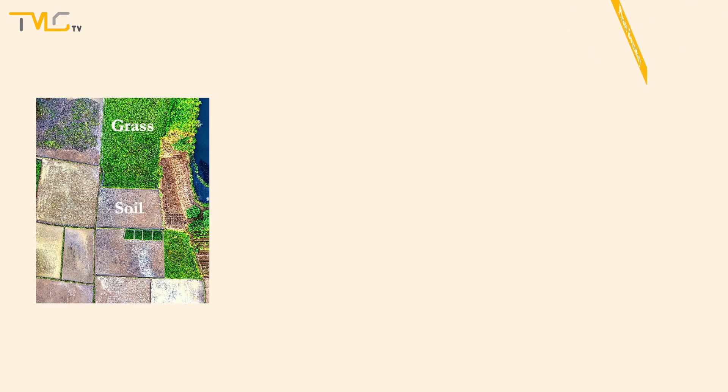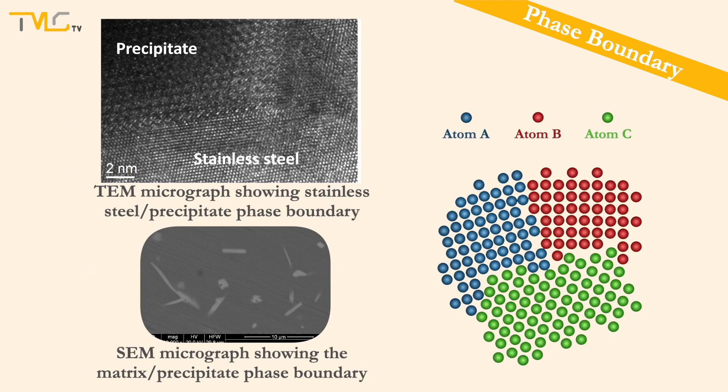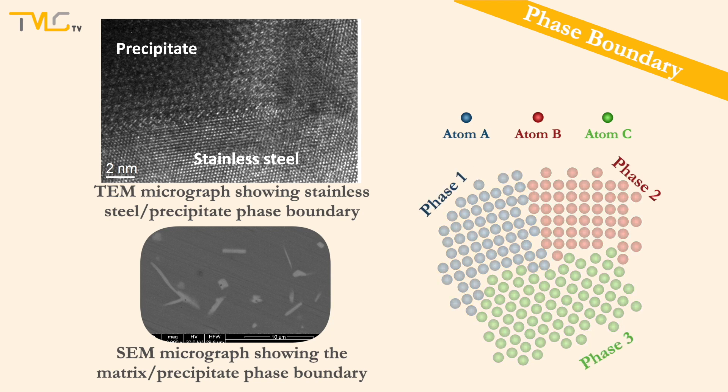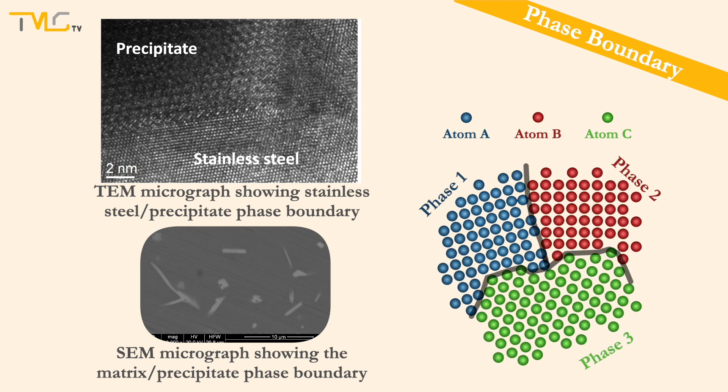When a material has more than one solid phase, there will be a phase boundary between these phases, since they will have different types of atoms at different positions and orientations. Similar to external surfaces and grain boundaries, phase boundaries will be high energy zones as well, because of the mismatch occurring at the interphase.